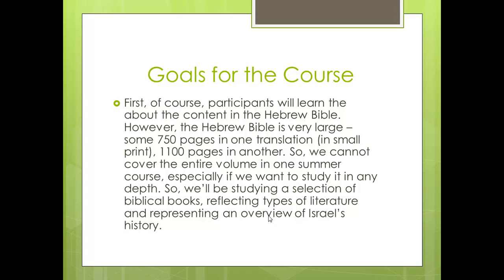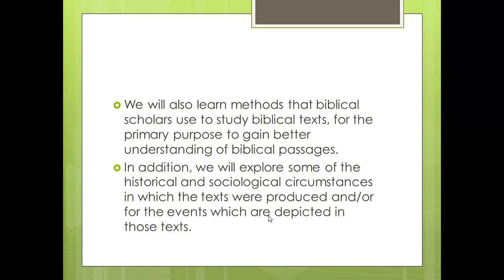Here are the goals for the course. First, participants will learn about the content in the Hebrew Bible. But since the Hebrew Bible is huge — 750 pages in one translation and 1,100 in another — we cannot cover the entire volume in one summer course, especially if we want to study any of the passages in depth. So we'll be looking at a selection of biblical books, reflecting types of literature, and representing an overview of Israel's history. We will also learn methods that biblical scholars use to study biblical texts, for the primary purpose of gaining better understanding of biblical passages. In addition, we will explore some of the historical and sociological circumstances in which the texts were produced and for those events which are depicted in those texts.